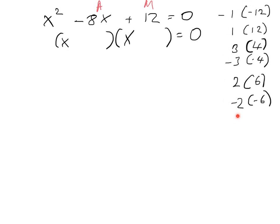So I've written over here all the possible possibilities for multiplying to give you 12. So you could multiply minus 1 by minus 12, 1 by 12, 3 by 4, or minus 3 by minus 4, because a minus by minus also gives you a plus. So we also have the possibility of 2 times 6 and minus 2 times minus 6.